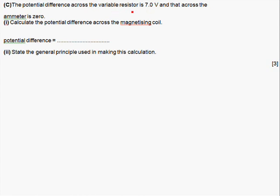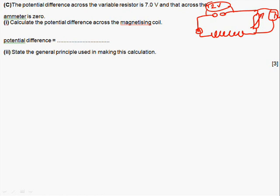The potential difference across the variable resistor is 7 volts, and across the ammeter it is zero. Calculate the potential difference across the magnetizing coil. Let's remind ourselves of what this circuit looked like. We had an ammeter there as well. We had this coil. And there's a variable resistor here. And there was 12 volts coming in. It's telling us that the voltage drop across the variable resistor is 7 volts. So what is the voltage across this? This is our unknown voltage.